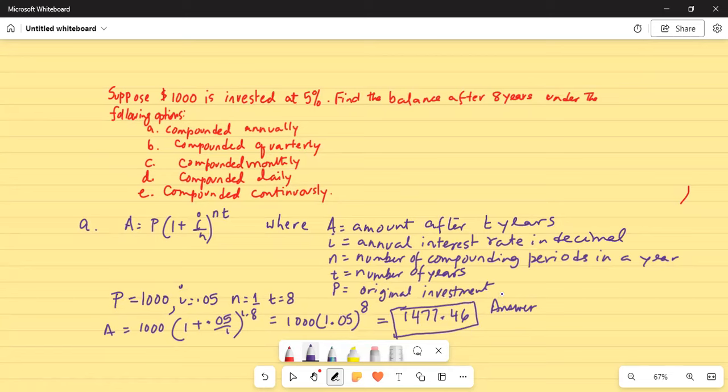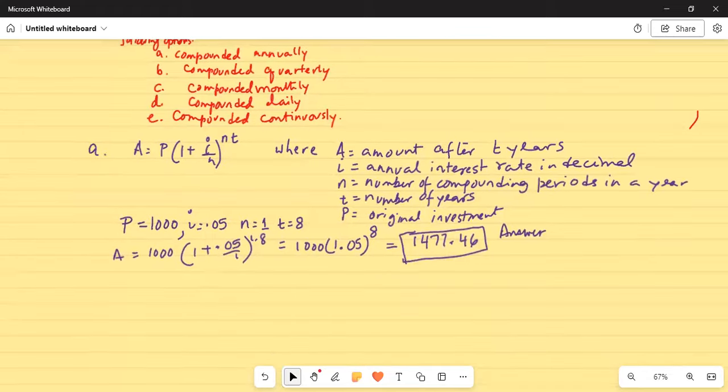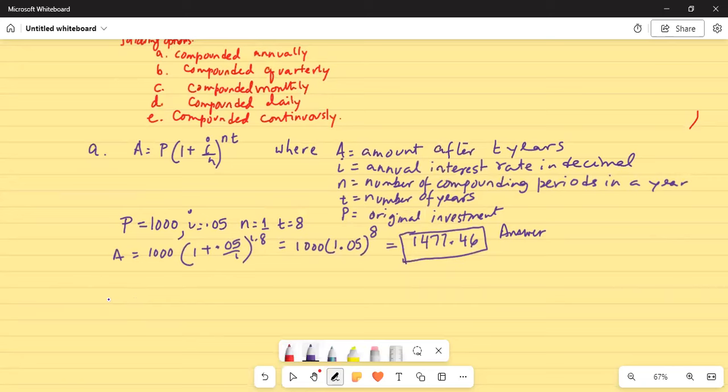So creating some space, we will do part B, compounded quarterly. Compounded quarterly means number of compounding period N equal to 4. Four quarters in a year.